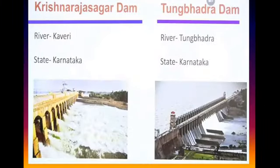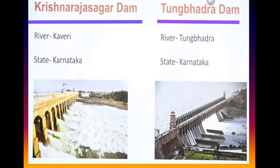In the next slide, two more dams are shown — Krishna Rajasagar Dam and Tungabhadra Dam. Krishna Rajasagar Dam is situated on the Kaveri River in Karnataka, and Tungabhadra Dam is situated on the Tungabhadra River, also in Karnataka. So both dams are in Karnataka — one on the Kaveri River and one on the Tungabhadra River.